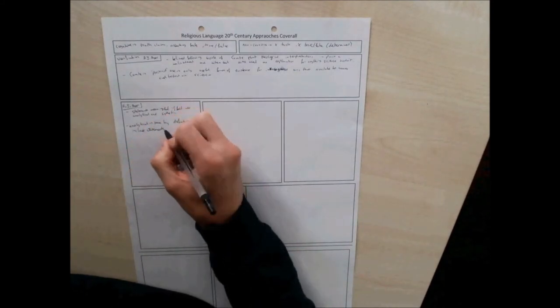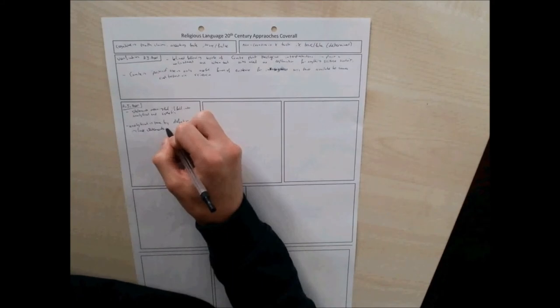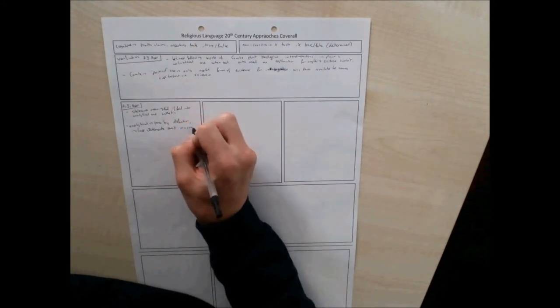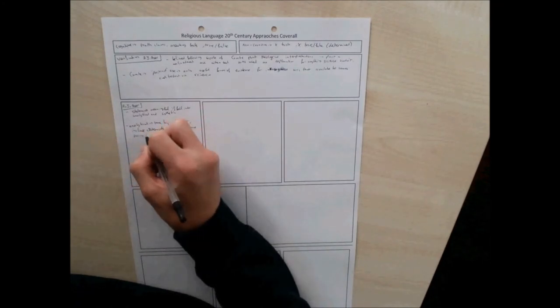These include tautologies where you say the same thing twice, a bit like univocal language. Ice is icy. Or mathematical statements. All of these are meaningful. Triangles have three sides. All analytical.